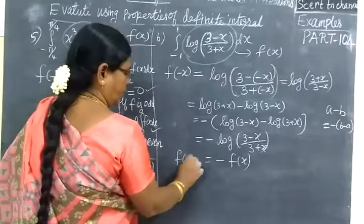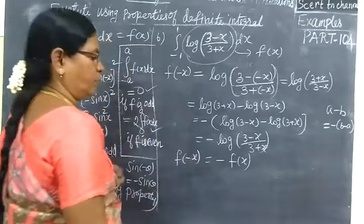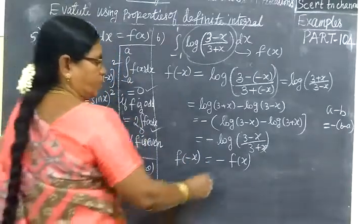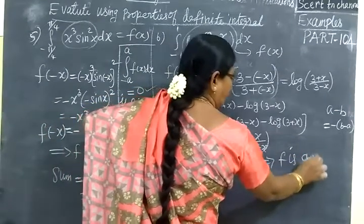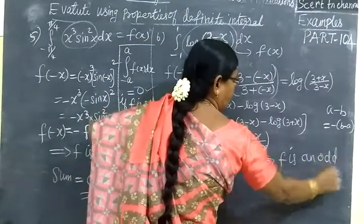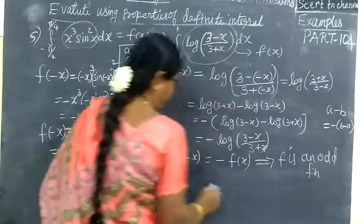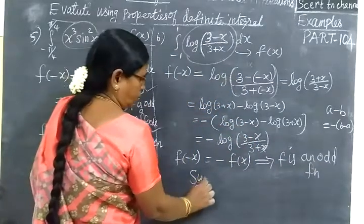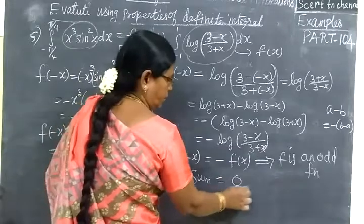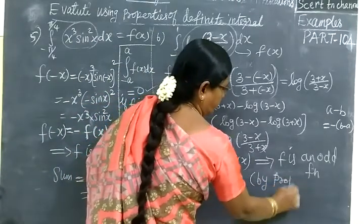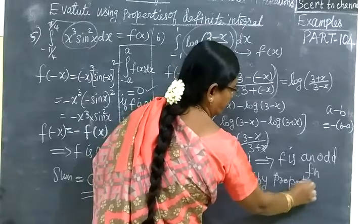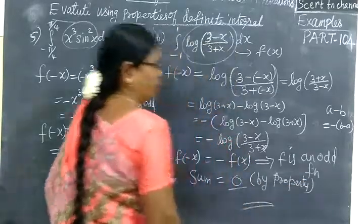In this way we can write this is nothing but minus f(x). f of minus x equals minus f(x). This implies f is an odd function.